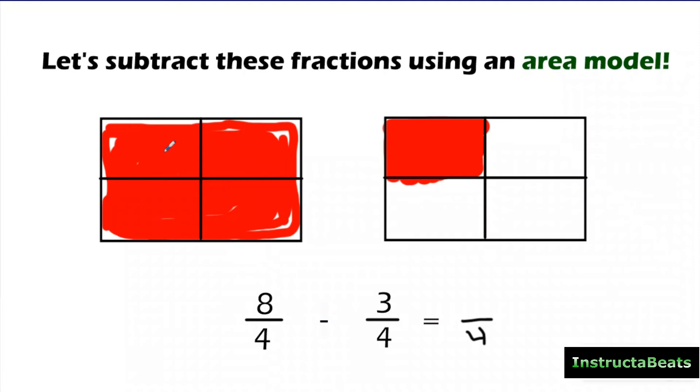But I only have 1, 2, 3, 4, 5 pieces left. And so my answer has to be 5/4. Or I have 1 entire hole and then 1/4 of another one. So this is an improper fraction. It means it's greater than 1. So I can do 5/4 or 1 and 1/4. So this is subtracting using an area model. And again, I checked it down here with the algorithm. Just showing you the math that I did as I was subtracting these.